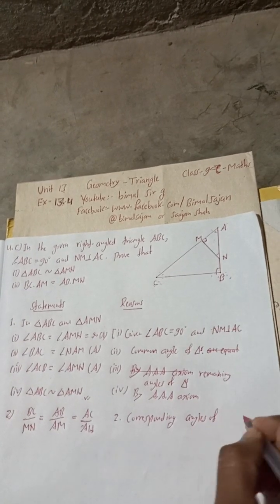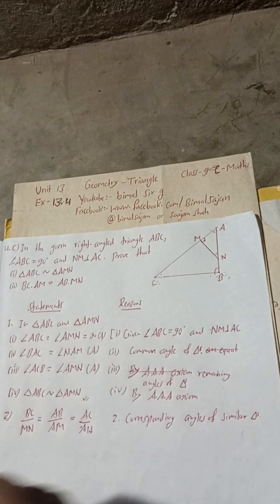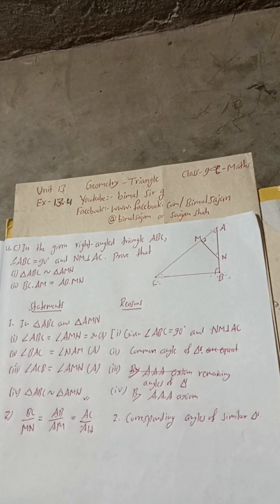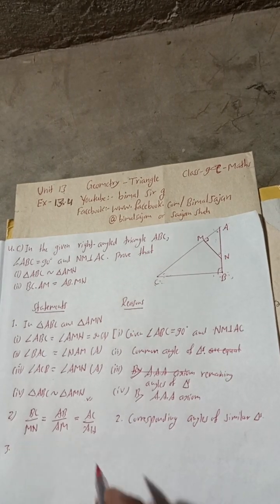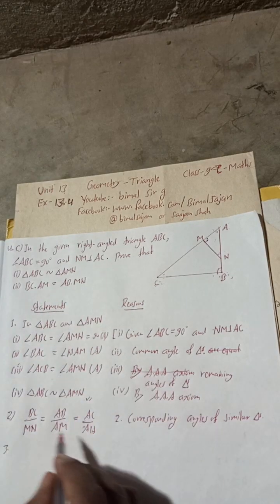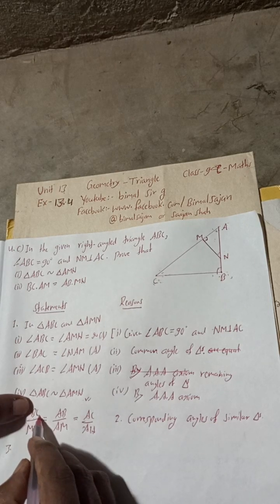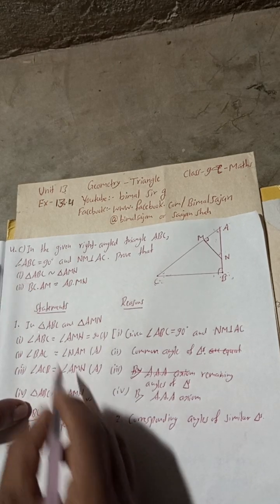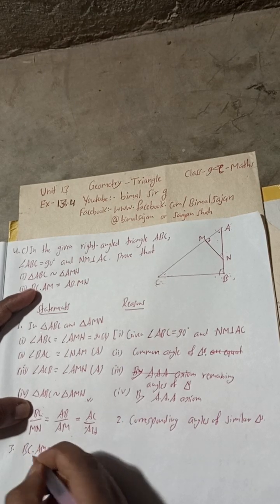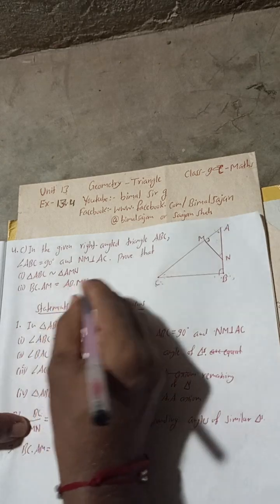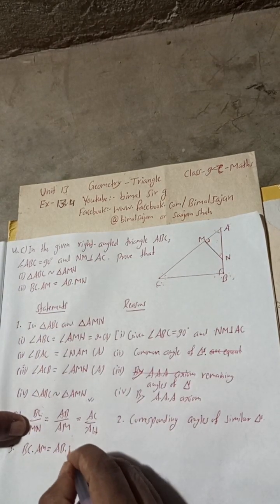From the first and second ratios — BC by MN equals AB by AM — cross multiplying gives: BC into AM equals AB into MN.